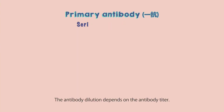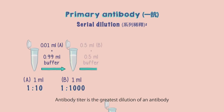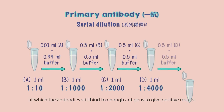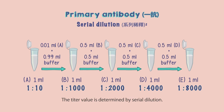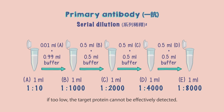The antibody dilution depends on the antibody titer. Antibody titer is the greatest dilution of an antibody at which the antibodies still bind to enough antigens to give positive results. The titer value is determined by serial dilution. If the concentration is too high, non-specific bindings will increase. If too low, the target protein cannot be effectively detected.